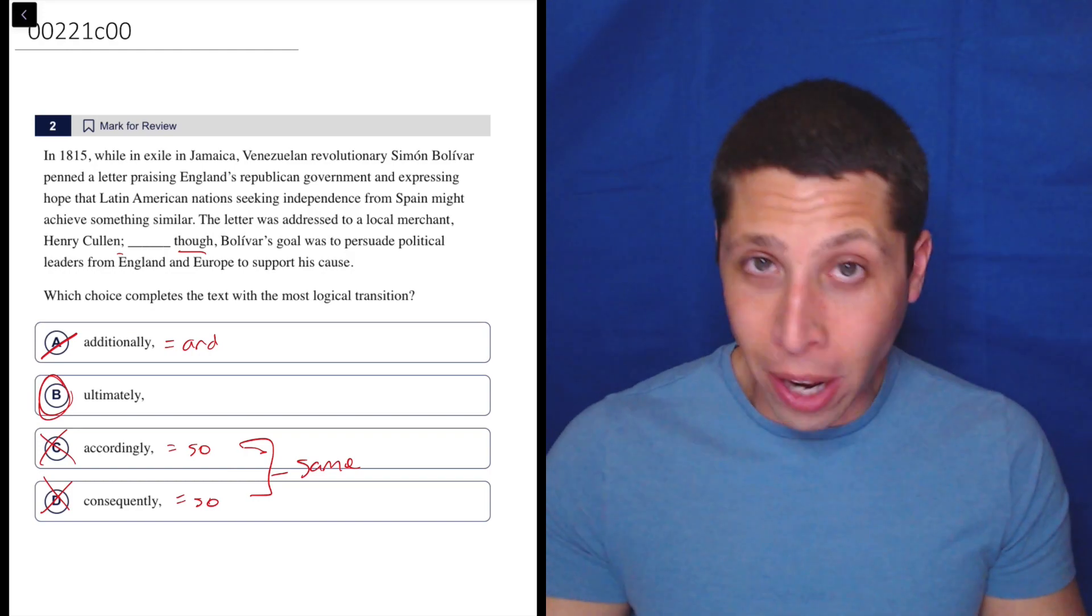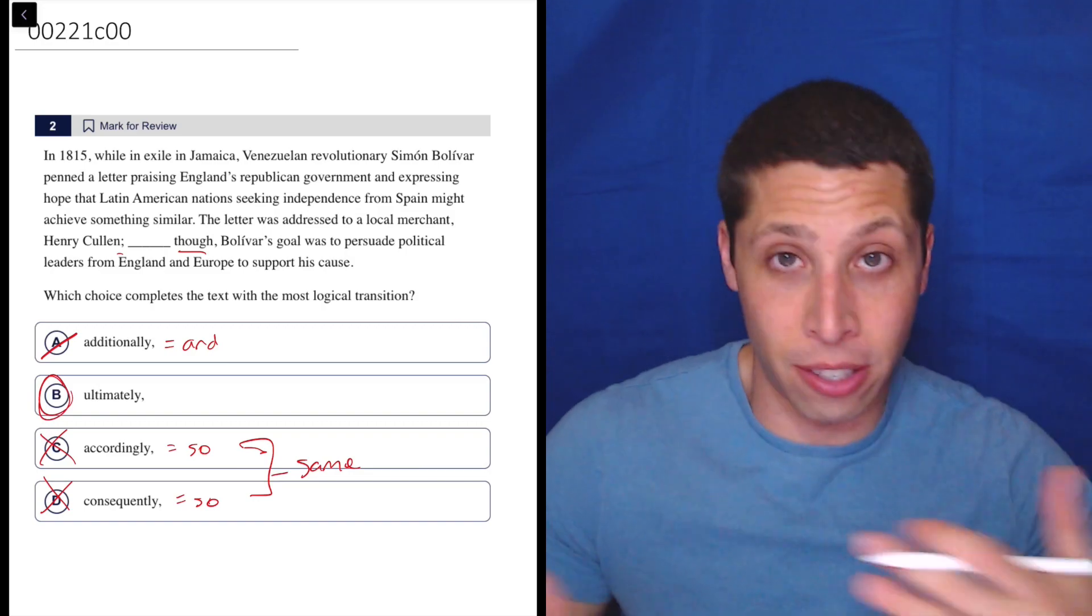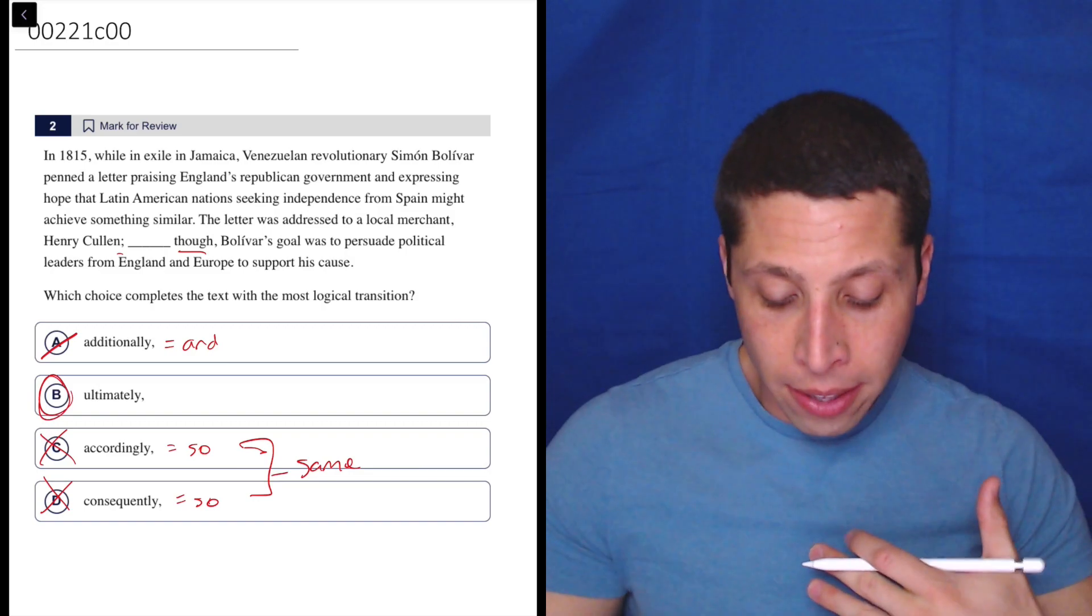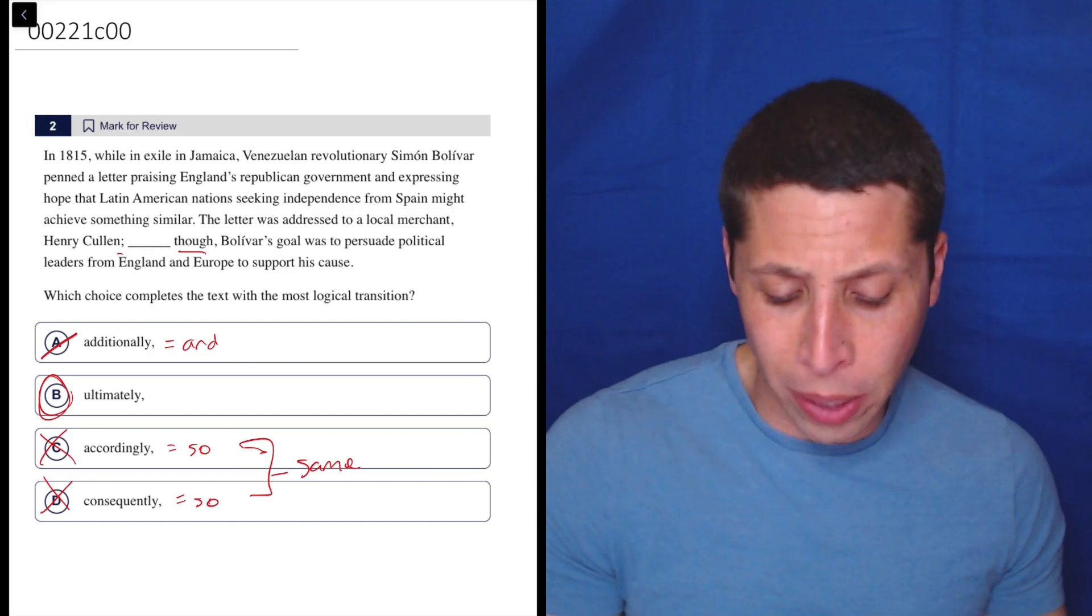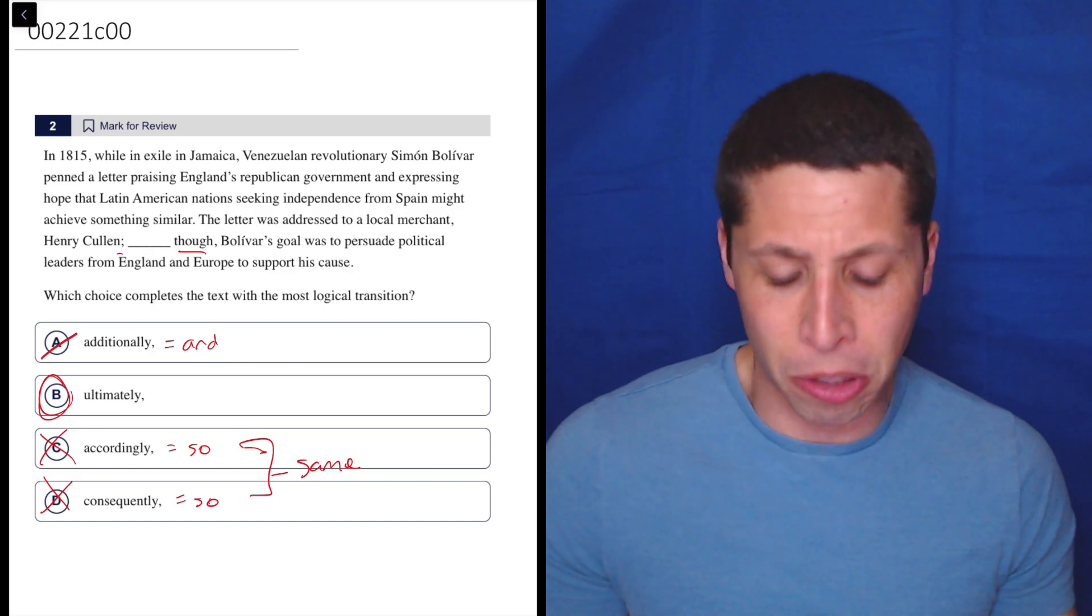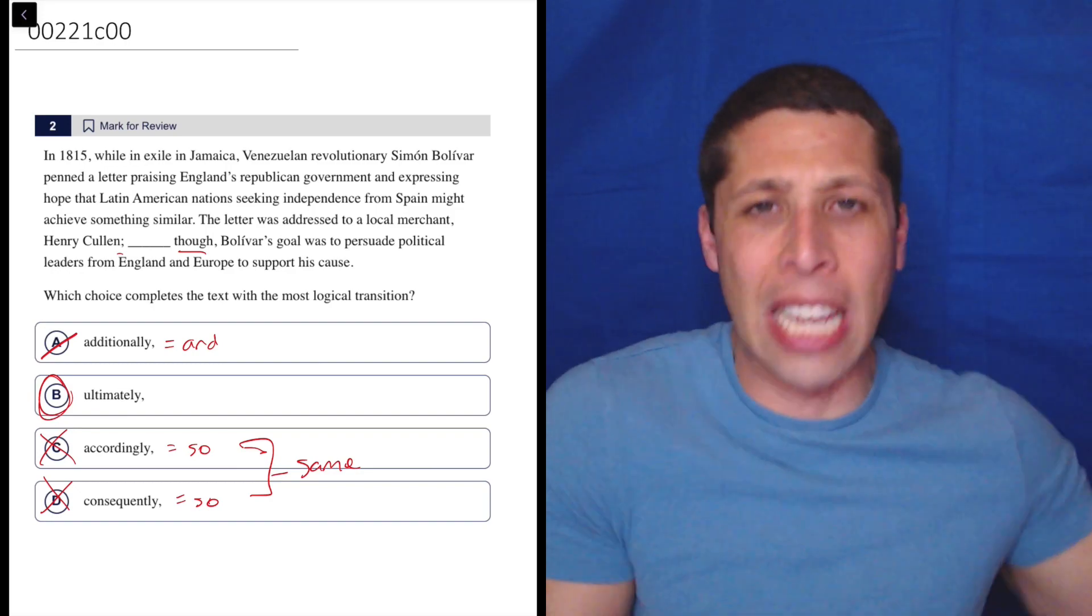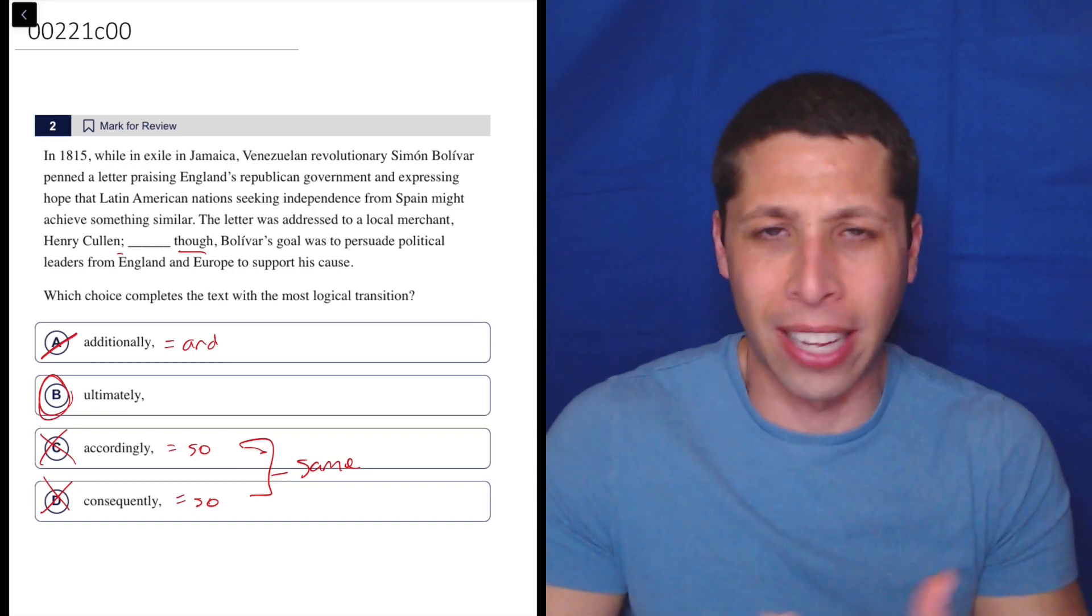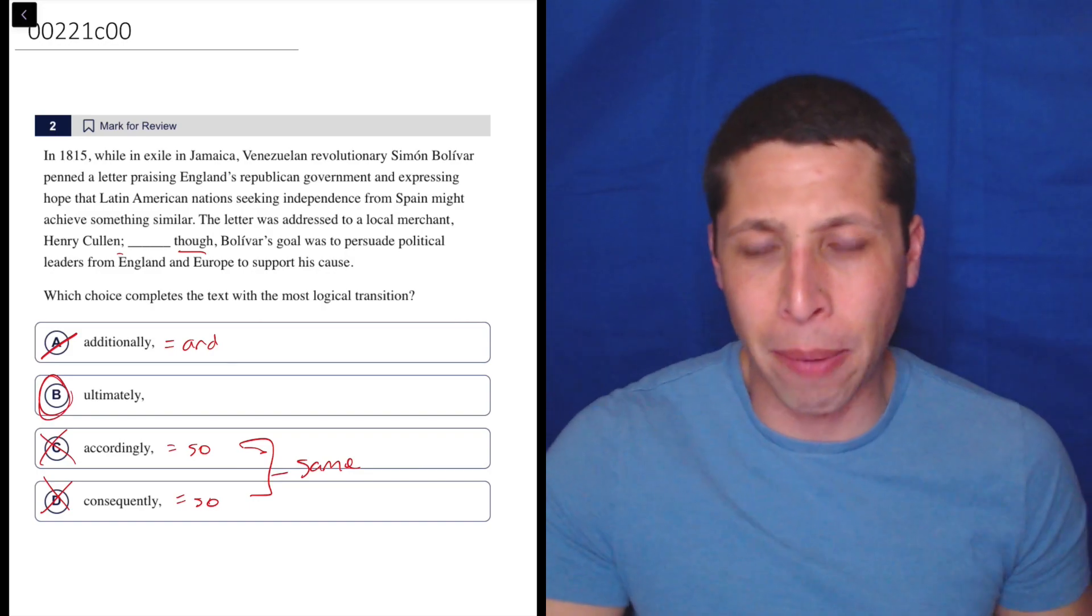Now there is a reason why ultimately works. And I guess we could also look at it from the perspective of this is not a cause and effect. The letter was addressed to a local merchant, so Bolivar's goal was to persuade political leaders from England and Europe to support his cause. It doesn't even make sense. Why is he sending it to a local merchant if he wants to convince the king to change their policy? It doesn't make any sense. So there's no cause and effect here. These are just two completely random ideas.